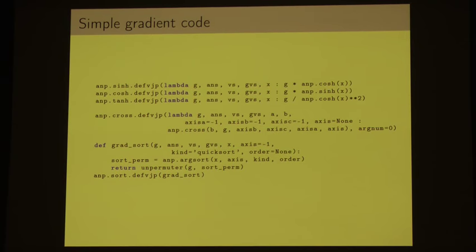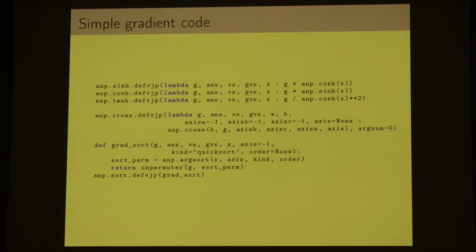Autograd is basically three things: it's a wrapper around NumPy, it's a list of gradients of all the operations in NumPy, and it's just a little bit of logic to put the chain rule on top of that. The bulk of the code is just a lot of definitions of derivatives that look like this, where we define the gradient of different operations in terms of other NumPy operations. This is of course how we have access to higher-order derivatives — we define the cross-products in terms of another cross-product, and we can compute the second derivative through the dot product.